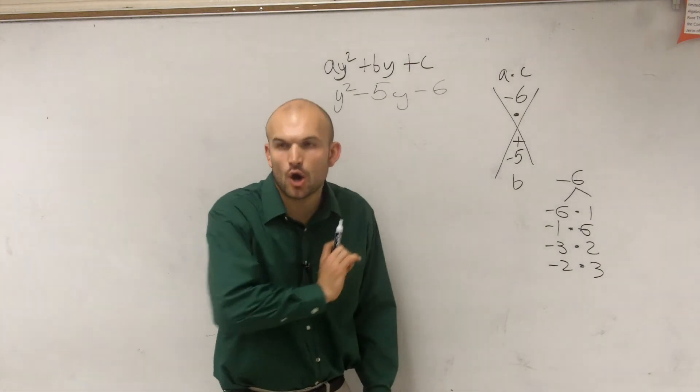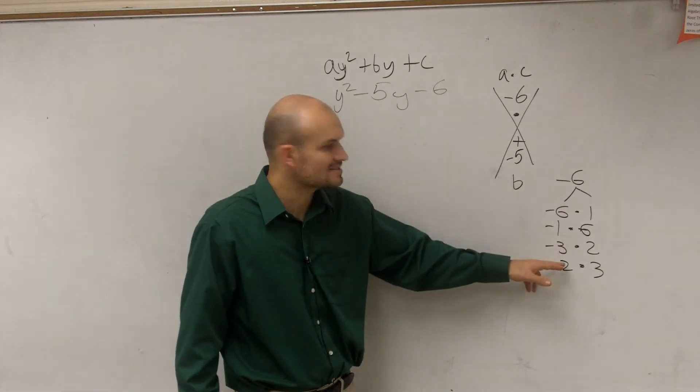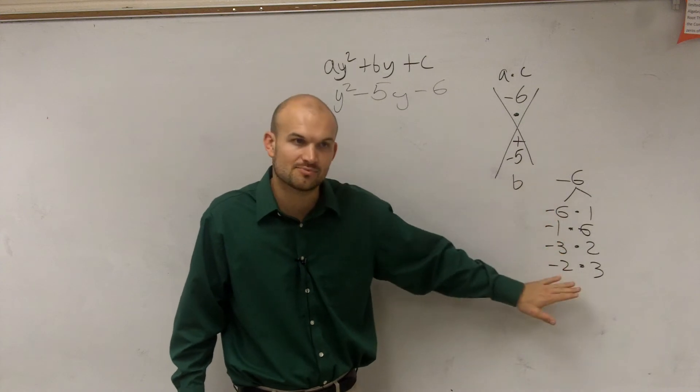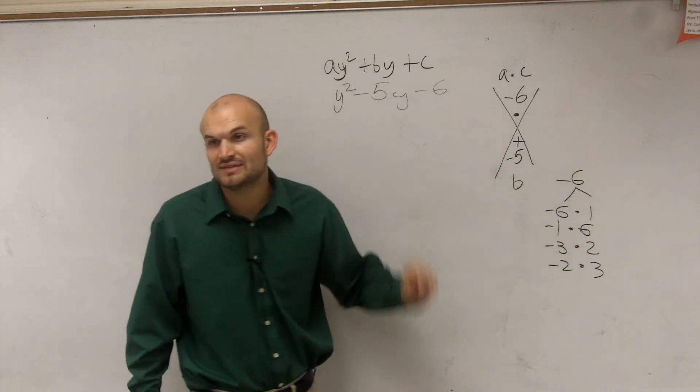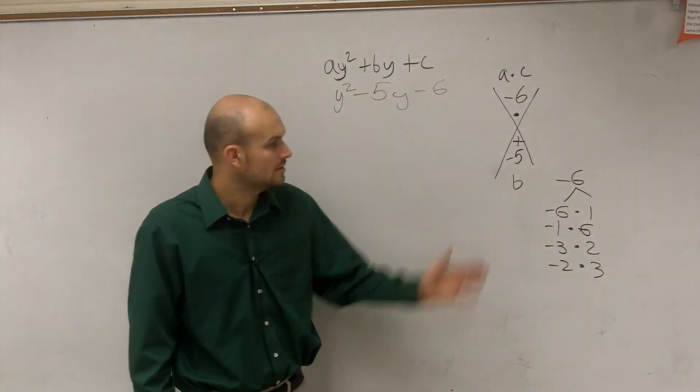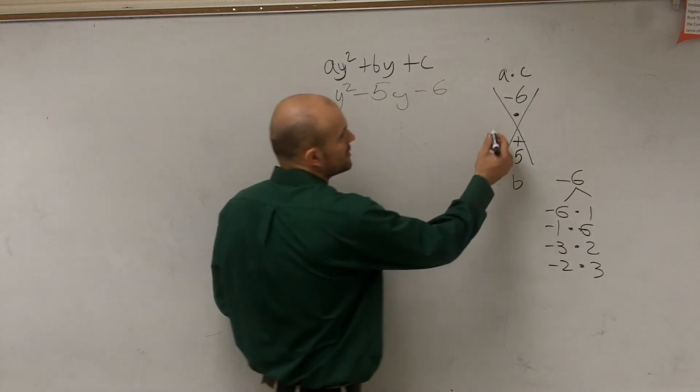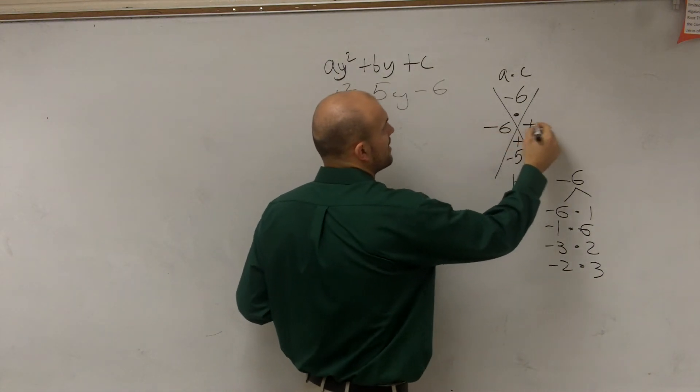What is the absolute only combination out of these that if I change the multiplication problem with an addition is going to give me negative 5? Negative 6 and positive 1. So I do negative 6 and positive 1.